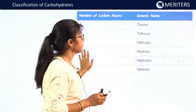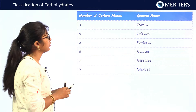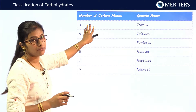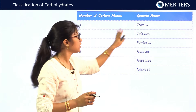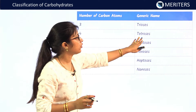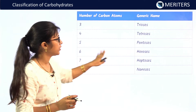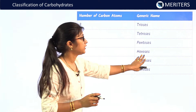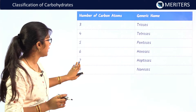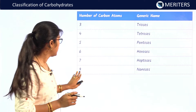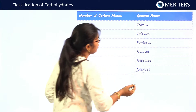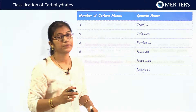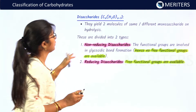Monosaccharides have generic names according to the number of carbon atoms. Three carbons: triose. Four carbons: tetrose. Five carbons: pentose. Six carbons: hexose — glucose is a common hexose example. Seven carbons: heptose. Nine carbons: nanose. These generic names are important for recognition of the saccharide.